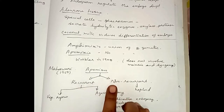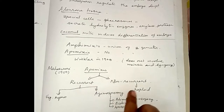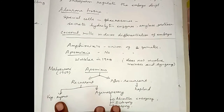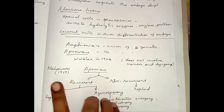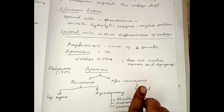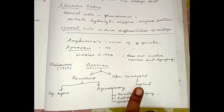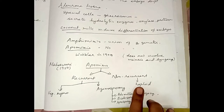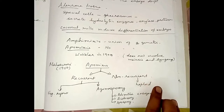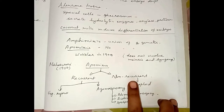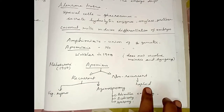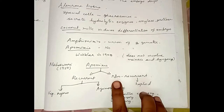Maheswari in 1950 classified apomixis into recurrent and non-recurrent. Non-recurrent apomixis involves haploid embryos: after meiosis, haploid gametes are formed, and without any fusion, each haploid cell produces an embryo — embryos are produced without fertilization. This is called non-recurrent apomixis.